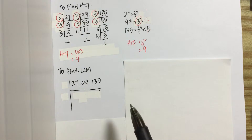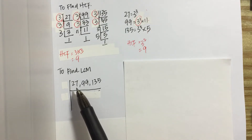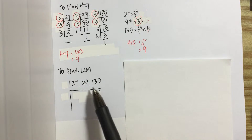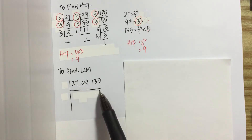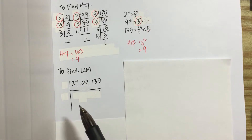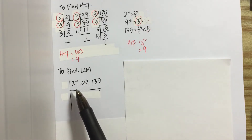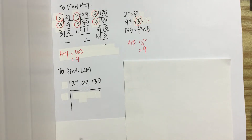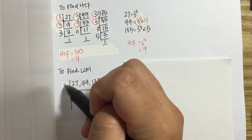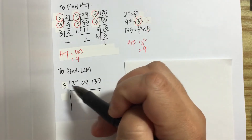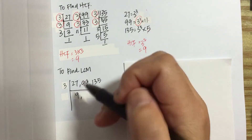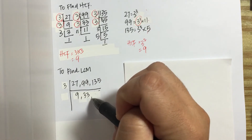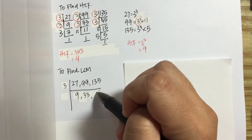To find the LCM of the three numbers, first we write the three numbers using the division method. We identify the smallest prime number that can divide any of these numbers — that would be 3. So we write 3 here: 27 divided by 3 gives 9, 99 divided by 3 gives 33, and 135 divided by 3 gives 45.